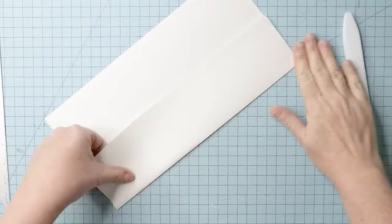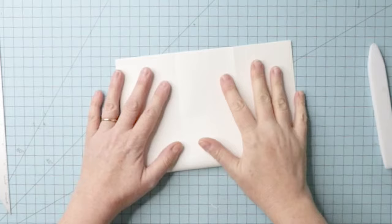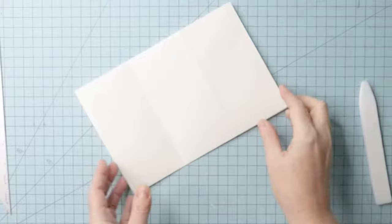I'm going to fold along those score lines. Bone fold in both directions. Now I'm going to fold the paper in half short edge to short edge. Carefully lining up the edges and again I'm going to bone fold on both sides.